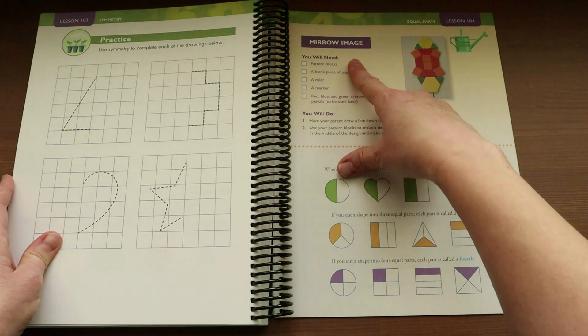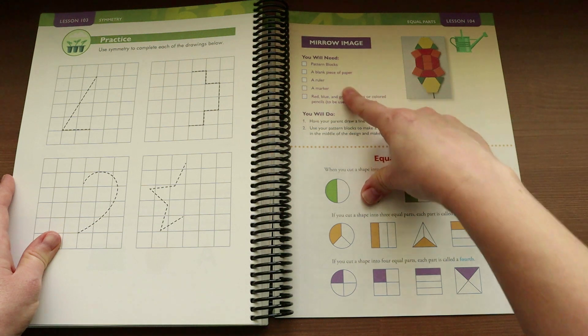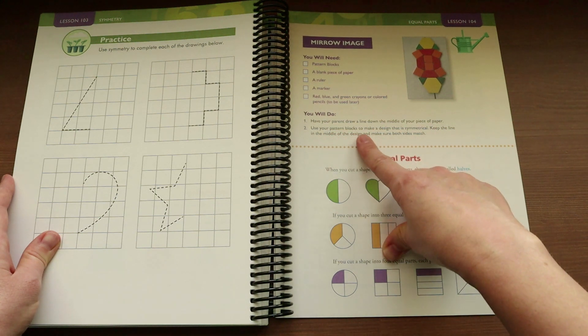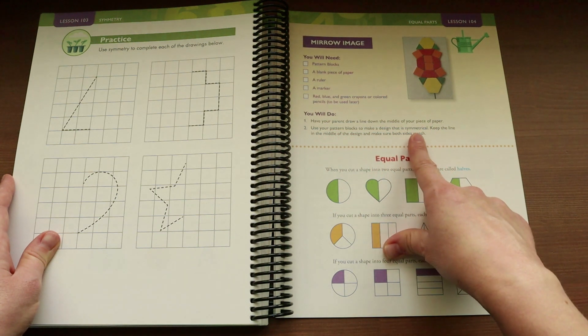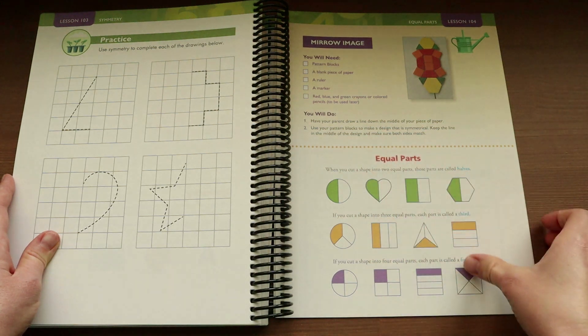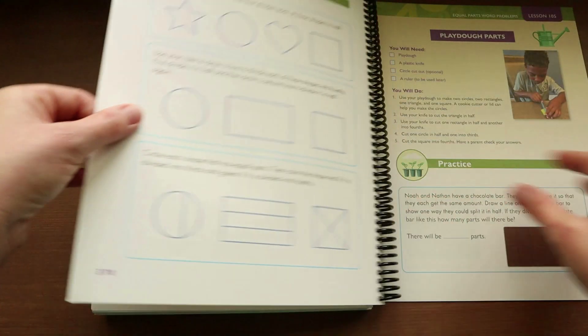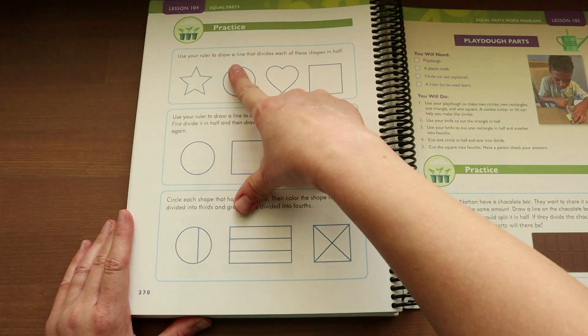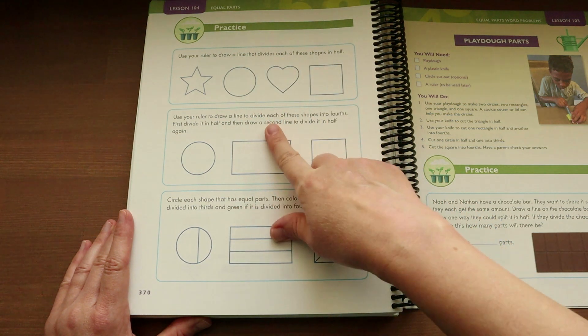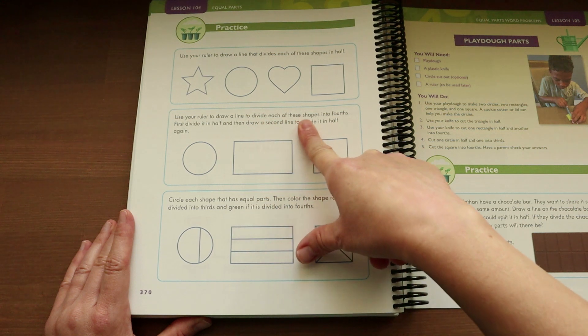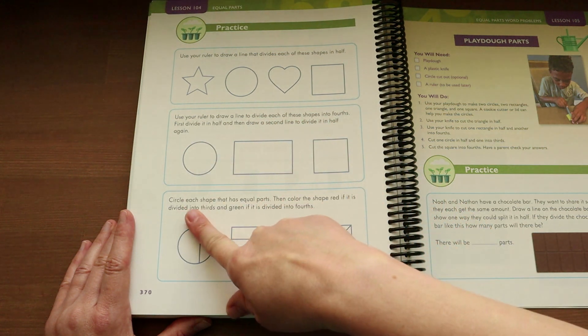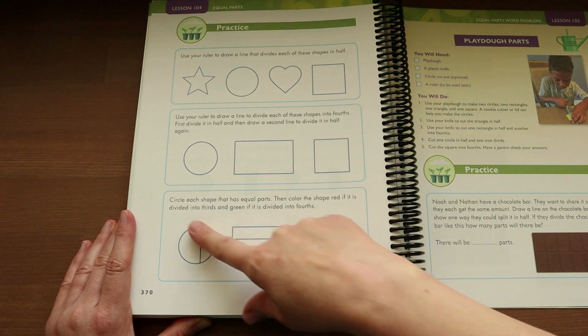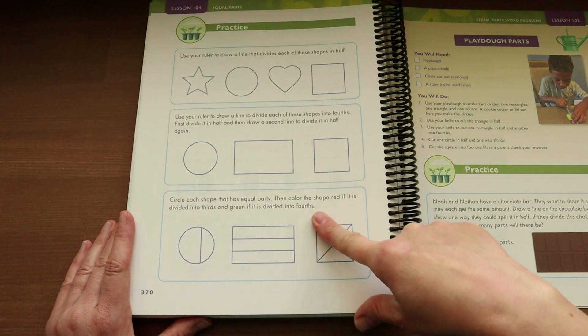They're going to be doing a little mirror image. It says, have your parent draw a line down the middle of your piece of paper. Use your paper block to make a design that is symmetrical. Keep the line in the middle of the design and make sure both sides match. On the next page, they will be practicing doing this themselves. It says, use your ruler to draw a line that divides each of these shapes in half. Use your ruler to draw a line to divide these shapes into fourths. Then circle each shape that has equal parts. Then color the shape red if it is divided into thirds and green if it is divided into fourths.